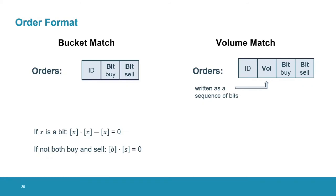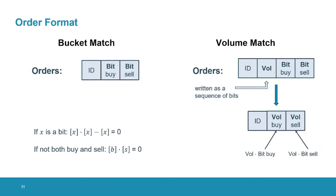We have an input correctness check for both the bucket match and the volume match, but since the volume match has volume information written as a sequence of bits, the check is a bit longer and more expensive. For volume match orders that pass the check, we take the sequence of bits representing the volume, use it to calculate the actual volume, and then multiply this volume by both the buy bit and the sell bit to rewrite the orders in this form. Just to note, in the previous work from 2019, the direction of the order was actually public — only the order volume was hidden — so this is already an improvement in privacy.